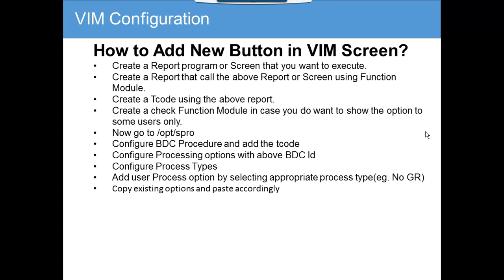The fourth portion is creating a check function module, in case you want to show the option to some users only. For example, if you want to give the post invoice button only to users who have MIDO authorization — if they don't have MIDO, they shouldn't see it. Similarly, if someone wants to change the PO but doesn't have MB22 authorization, those buttons will not be shown. Using this check function module you can filter those things.